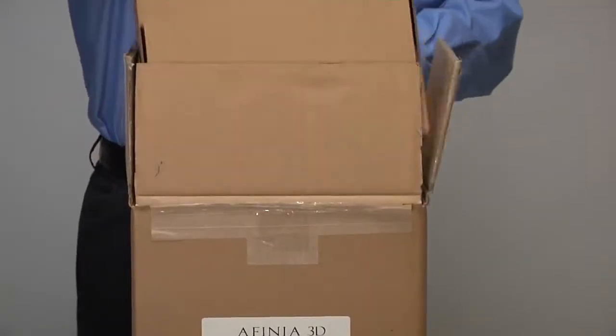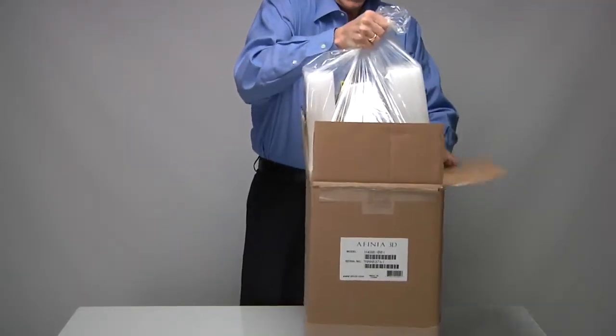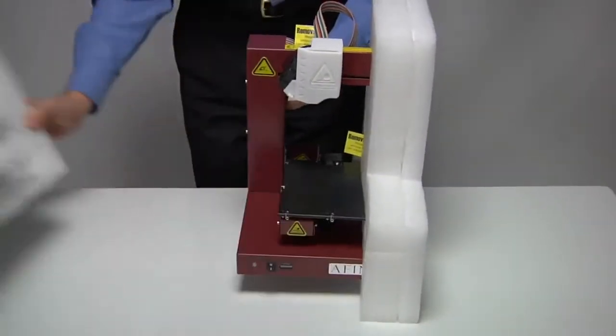Remove the accessory pack and set it aside. We'll use it later. Carefully lift the printer and foam from the box, remove the plastic bag from the printer, and remove the foam while supporting the printer.